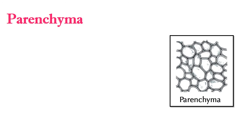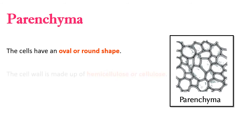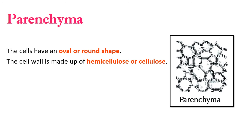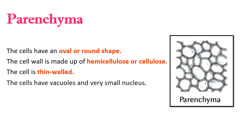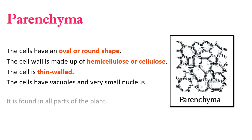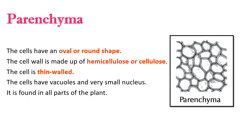The first kind of simple permanent tissue is parenchyma. The cells of parenchyma have an oval or round shape. The cell wall is made up of hemicellulose or cellulose. Cells are thin-walled; they have vacuoles and a very small nucleus. It is found in all parts of the plant. The protoplasm of parenchymatic cells is living and dense.